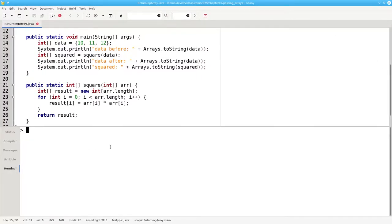Here's the code. Let's run this program. And we'll see that the data array is the same before and after. And we have a brand new array, squared, that has the results we want.